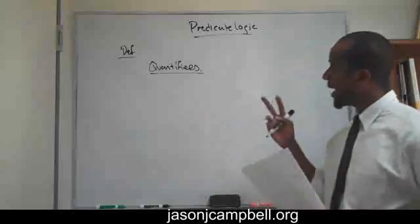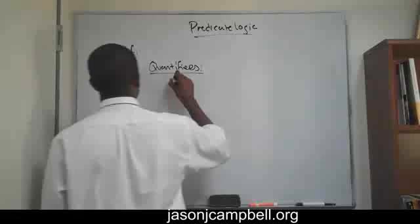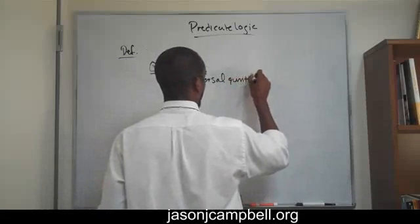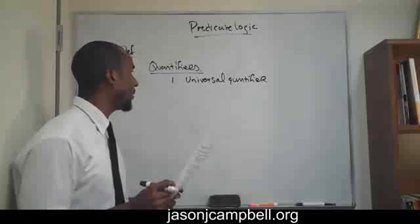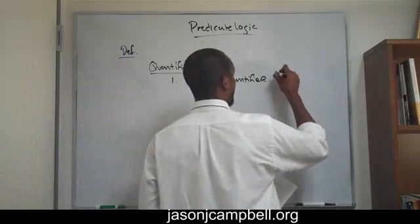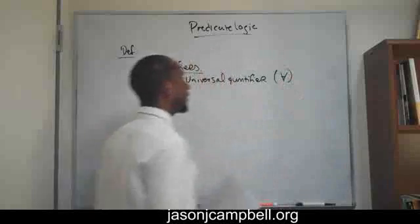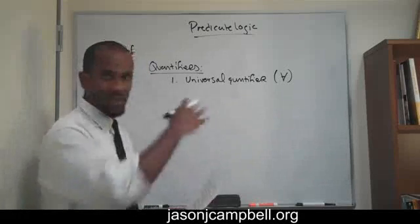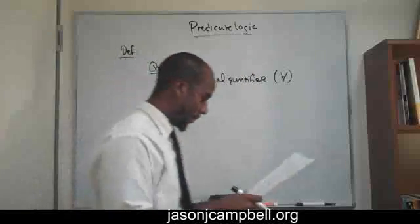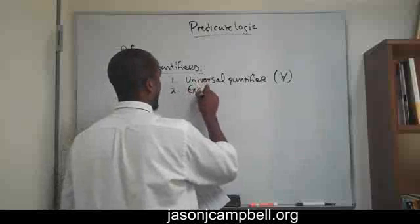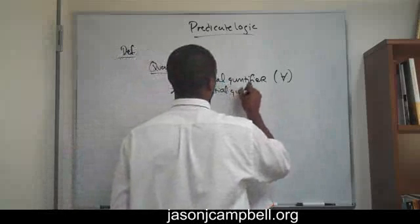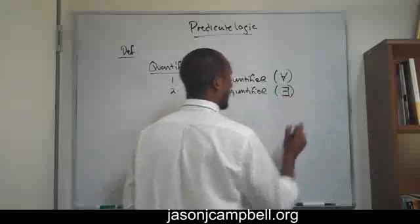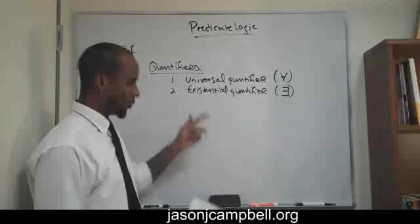So quantifiers. We have, at this level, two quantifiers. The first quantifier that we have is what's known as a universal quantifier, and the universal quantifier is simply symbolized as this upside-down A. That's what it is. And I'll tell you how to read it and what it means in a second. The next quantifier that we have is what's known as an existential quantifier, and it's symbolized by a backwards E. So universal quantifier, existential quantifier.